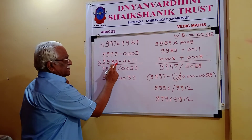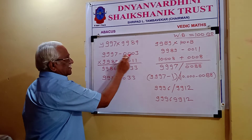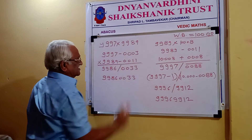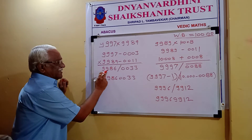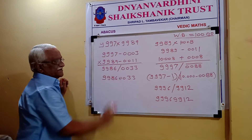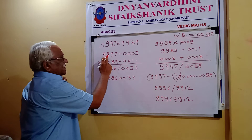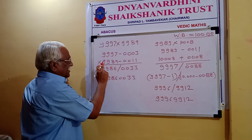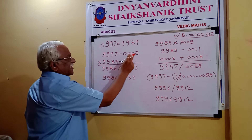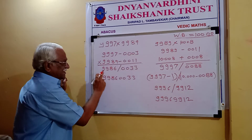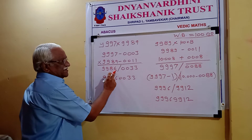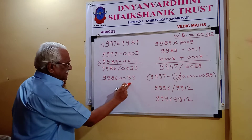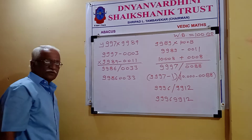Now for the left part: 9,989 minus 3, or 9,997 minus 11 — it comes to be 9,986. So here the answer is 9,986 and 0,033, giving 9,986,0033.